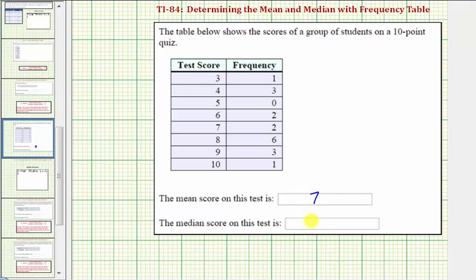So the mean is seven, the median is eight, and that's it for this question. I hope you found this helpful.